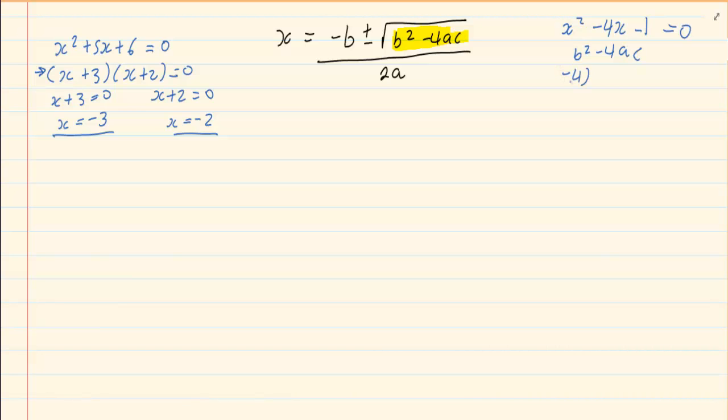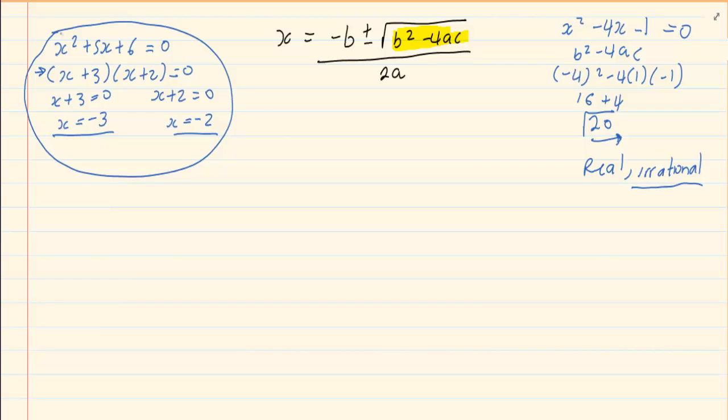b squared is (-4) squared, minus 4, a is 1 and c is minus 1. You would have 16 plus 4, which is 20. And if you root 20, you will see that the nature of the roots are real, so they do exist, but they are irrational. Irrational shows us that we cannot solve it by means of simply factorizing. Therefore, we have to use the formula.